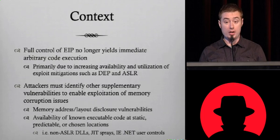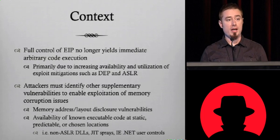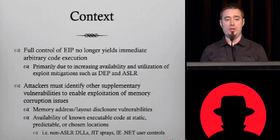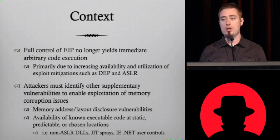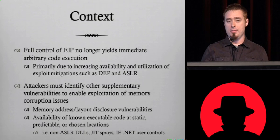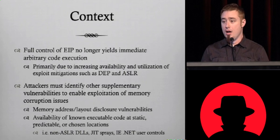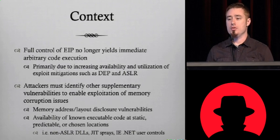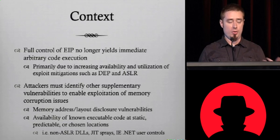Some of the options are: one, find DLLs that don't opt into ASLR, whether third-party or built into the operating system. Two, you can use something like a JIT spray, which lets you spray the heap with executable code you can partially control to bridge to your shellcode. Or, about two years ago, Mark Dowd and Alex Sodorov presented a way of using .NET user controls in IE to place executable code at a fixed location in memory. Any of these types of issues are now required to exploit memory corruption vulnerabilities on a modern operating system like Windows 7.